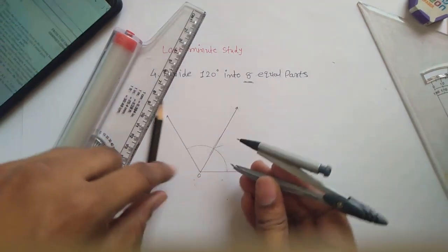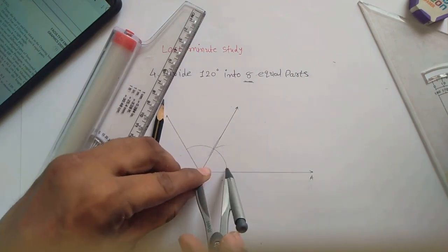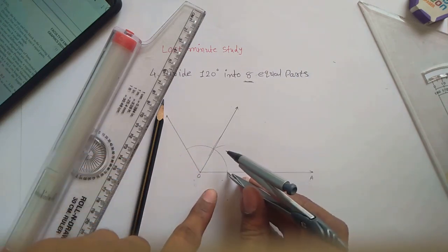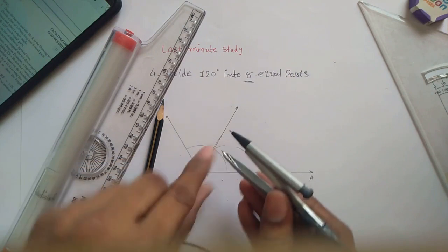For that, the initial step is to draw this curvature like this, but it is already drawn. So maintain this distance every time, put the pointer over here like this, and make an arc outside the curve.